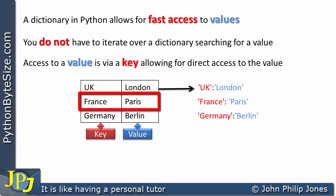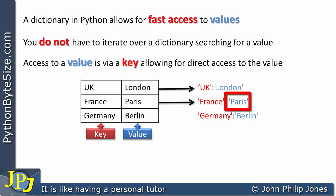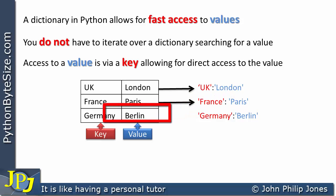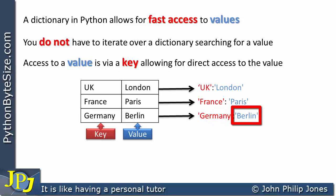If we look at this entry in the table, we can see it is here in its Python form, where again the key is a string — in this case it's France — and the value is Paris, again a string, with a colon separating them. We can go on to the last row and see that this is the one where Germany is the key and Berlin is the value.